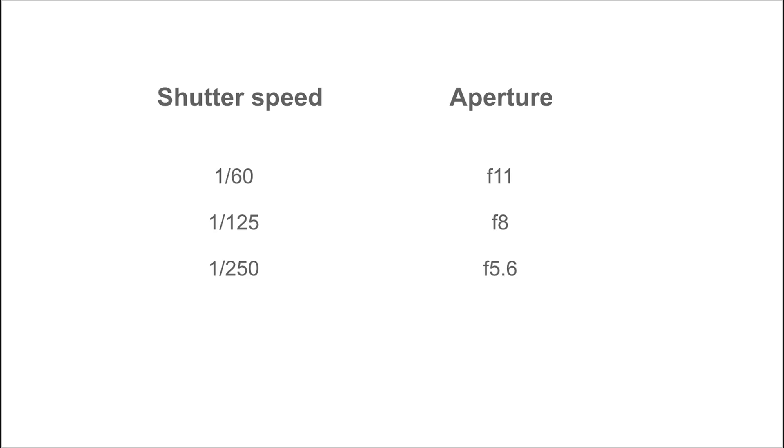Reciprocity means that reducing the aperture by one stop and increasing the exposure by one stop will give the same resulting exposure. So a 125th of a second at f8 will give the same exposure as a 250th at f5.6, or a 60th at f11.